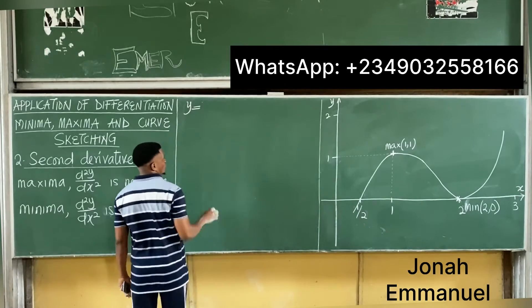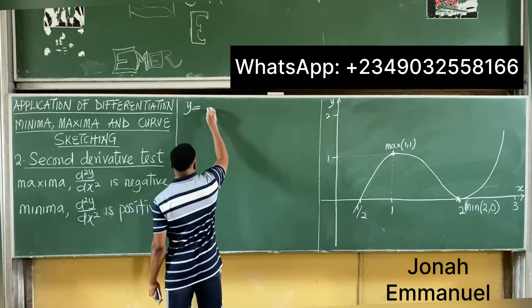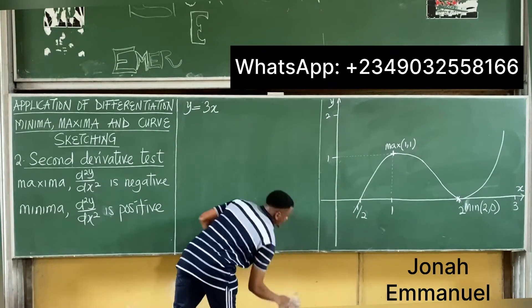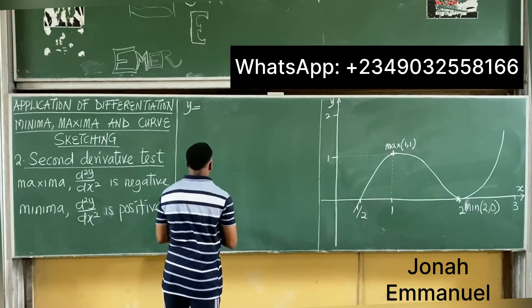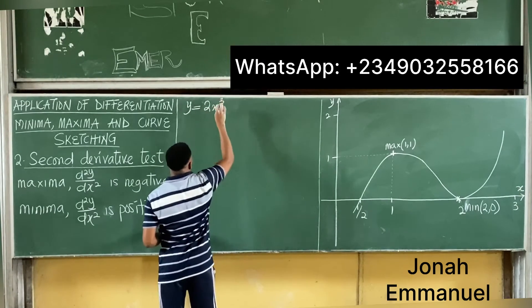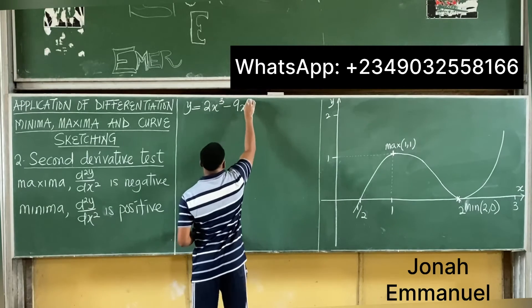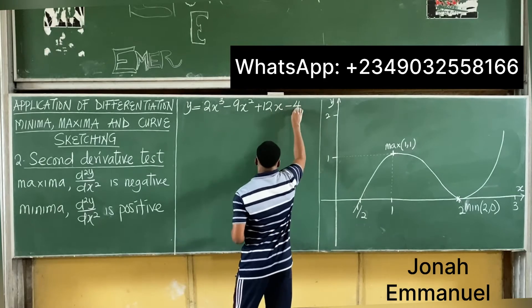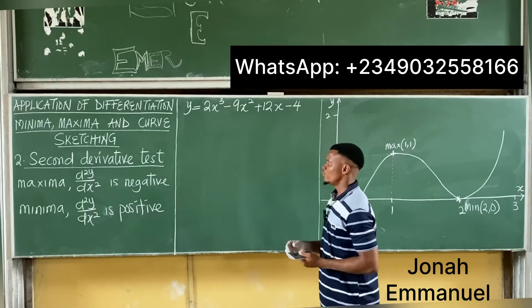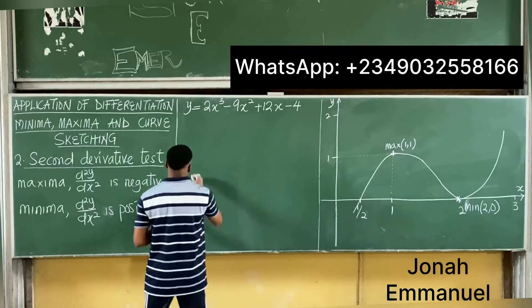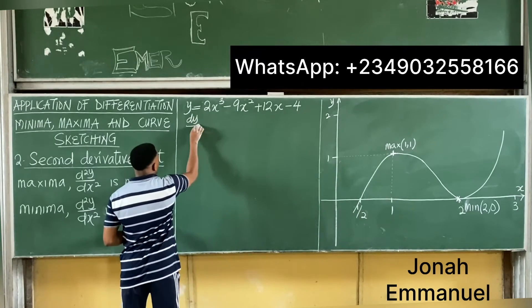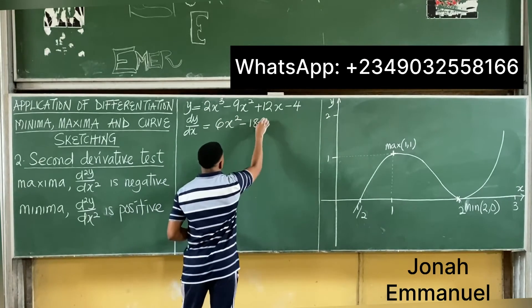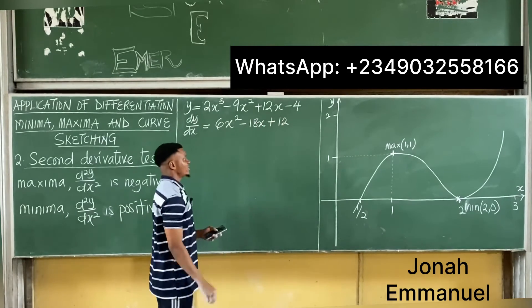We took an example from our previous class: y = 2x³ - 9x² + 12x - 4. From this we found the first derivative: dy/dx = 6x² - 18x + 12.